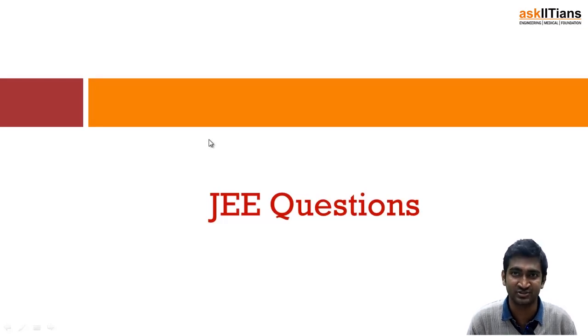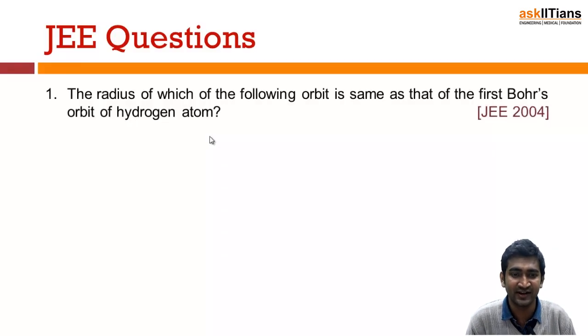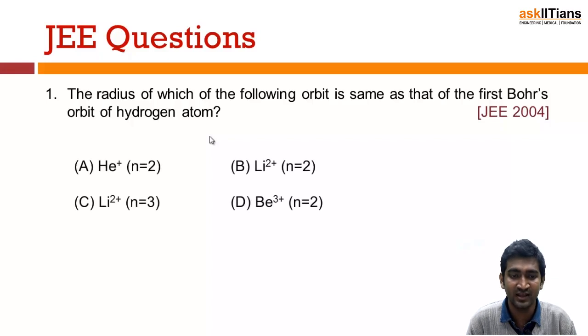Now we'll do some JEE questions so that your confidence will get boosted up. Be ready for it. The first question: the radius of which of the following orbit is same as that of first Bohr's orbit of hydrogen atom? You have to remember the formula which I discussed in the Niels Bohr model for radius.